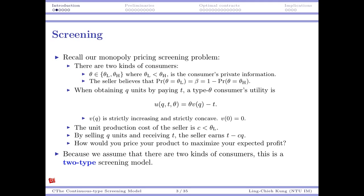The unit production cost is c, which is less than theta-low. By selling q units and receiving t, the seller earns t minus cq. The question is how to price the product to maximize expected profit — that's the seller's contract design problem about choosing prices for products with different quantities. Because we assume there are two kinds of consumers, this is a two-type screening model.